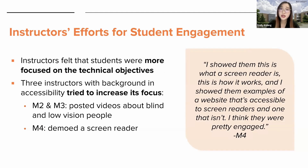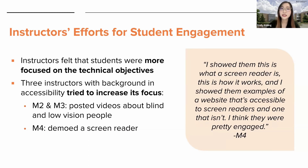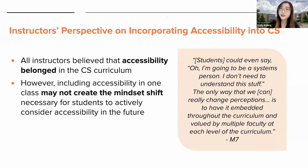Regarding class engagement, instructors shared that students were more focused on the technical objectives, like completing assignments for a good grade, rather than accessibility concepts. However, three instructors who had a background in accessibility tried additional strategies to emphasize the importance of accessibility. For example, M2 and M3 posted videos about blind and low-vision people, while M4 demoed a screen reader and mentioned that students were really engaged during that demo. Although more than half the instructors had no prior experience teaching accessibility, all of them believed that accessibility belonged in the CS curriculum. However, some felt that including it in only one class might not create the mindset shift necessary, noting the need to have it embedded throughout the curriculum and valued by multiple faculty at each level.